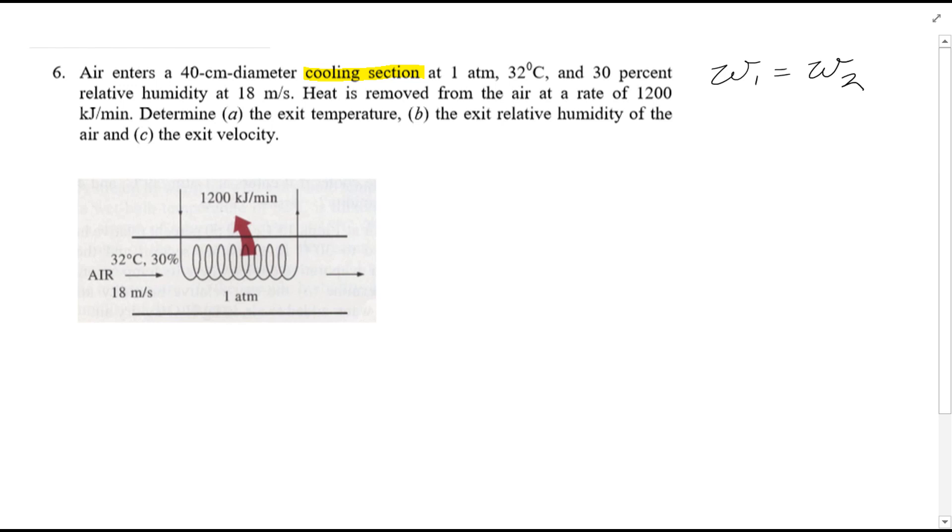Now looking at the question, you can see the diameter is given, which is quite important. Remember from the equation, volume flow rate is equal to the velocity times area, and area is equal to pi r squared. It's worth bearing this in mind because these are some things we're going to consider.